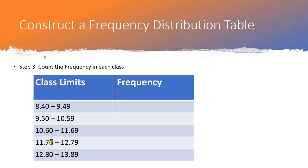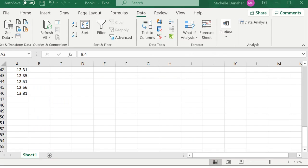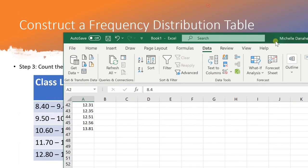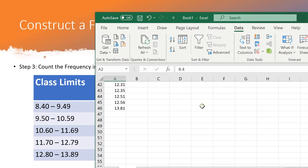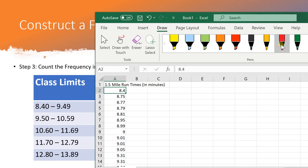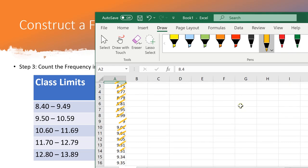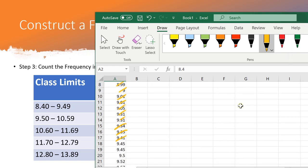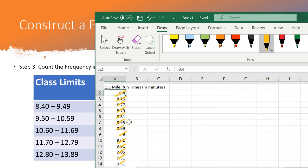Now we're ready to find our frequencies. To find our frequencies, I'll need to go back to my Excel data. This is another reason why it's really nice that my Excel data is sorted. So if I go to the top, this first class is 8.4 to 9.49. Basically what I need to do is count how many observations are in that range. So I start 1, 2, 3, 4, 5, 6, 7, 8, 9, 10, 11, 12, 13, 14, 15, 16, 17, 18. I'll stop there. 18 observations in the first class.